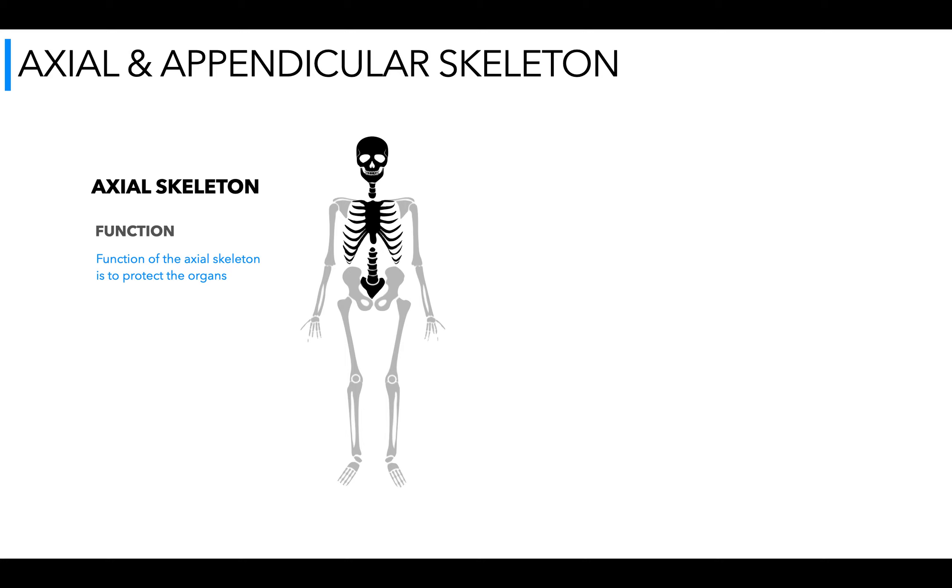Now let's move on to the axial and appendicular skeleton. This might be different to what you were taught at GCSE but it's just giving two areas of where we have bones in the skeleton and they have different functions. If we focus on the black section of the skeleton there, this is known as the axial skeleton and this has a particular function. Its function is to protect the organs.